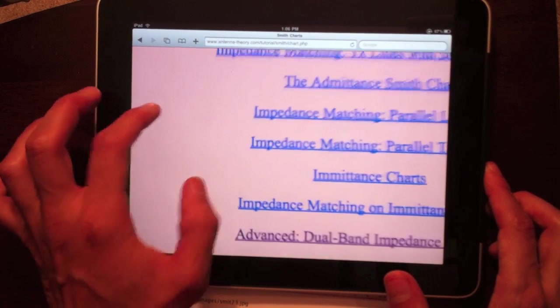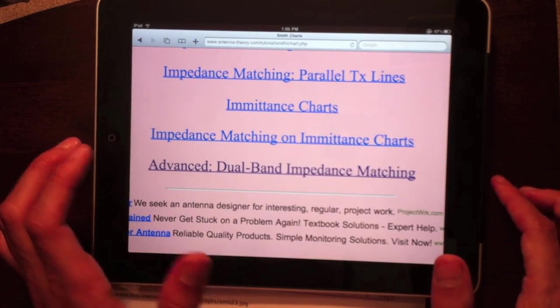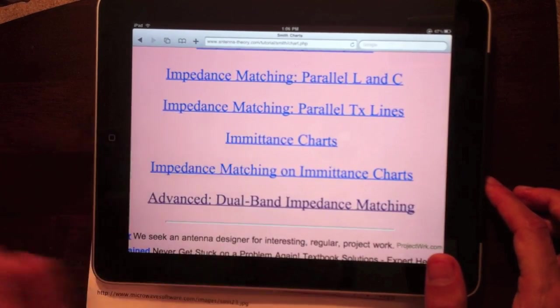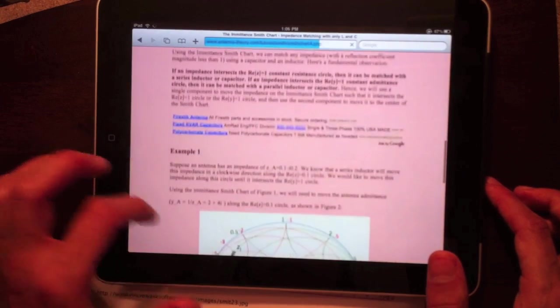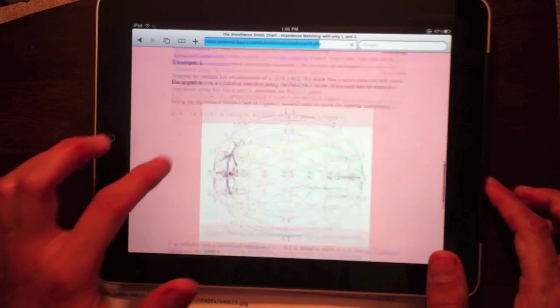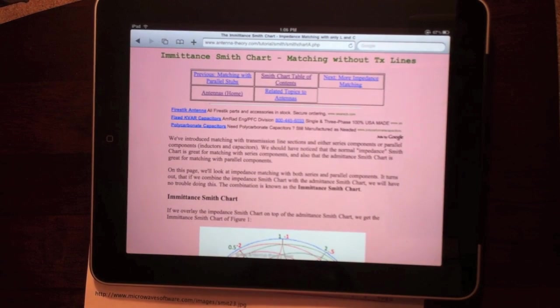So if you want to see more or understand the Smith chart and how impedance matching is done, just go through this. I hope it's fairly straightforward. But that is an introduction to Smith charts.